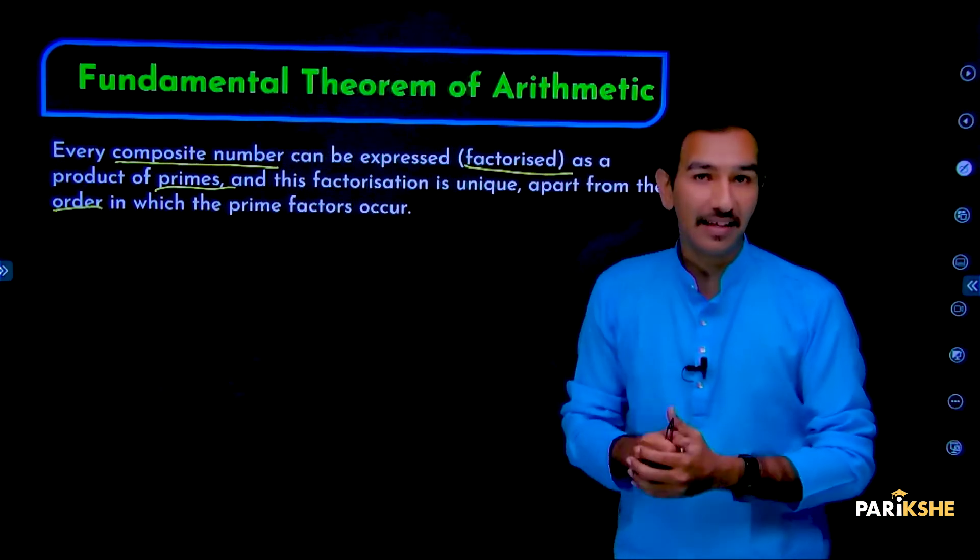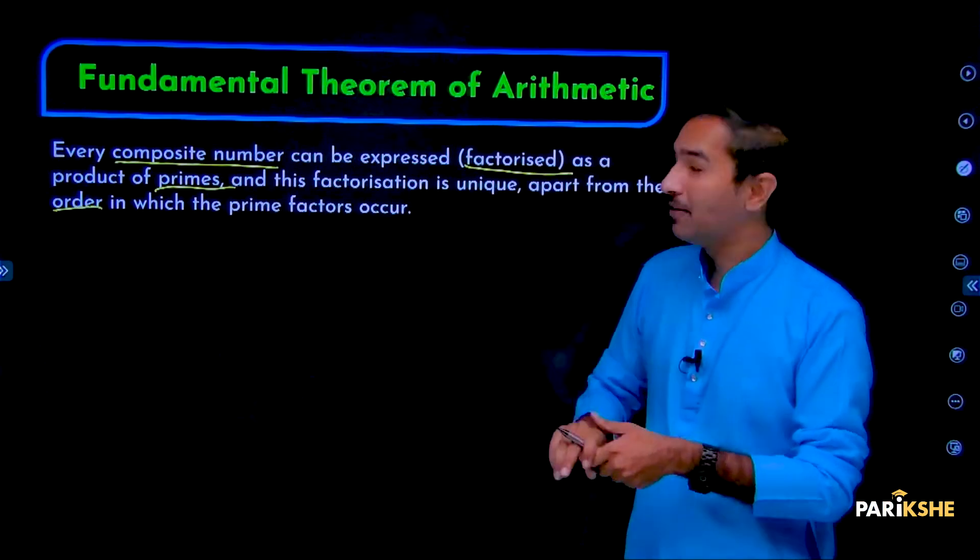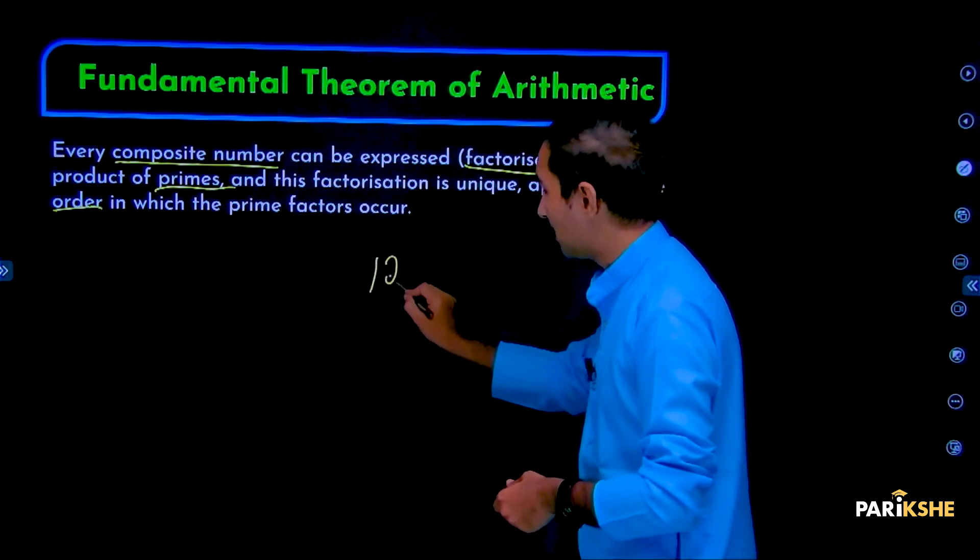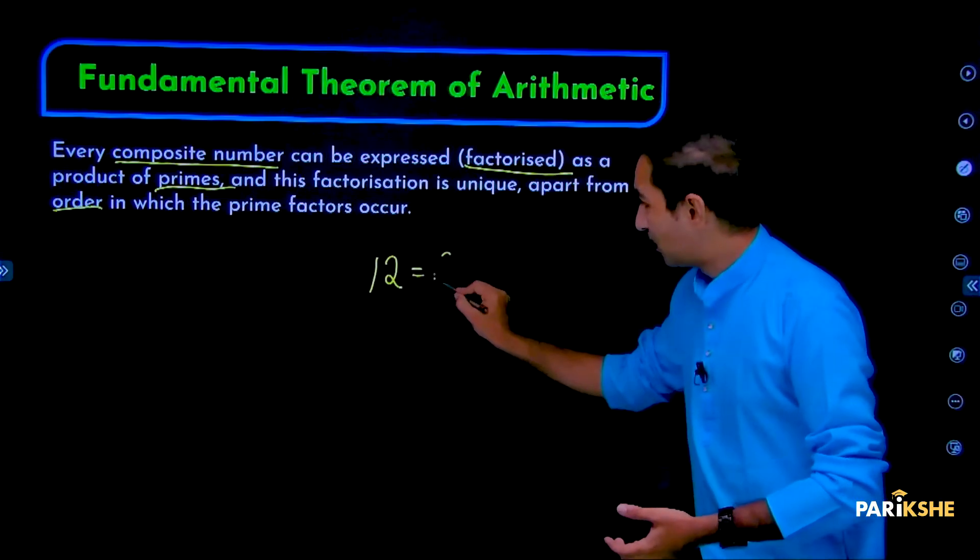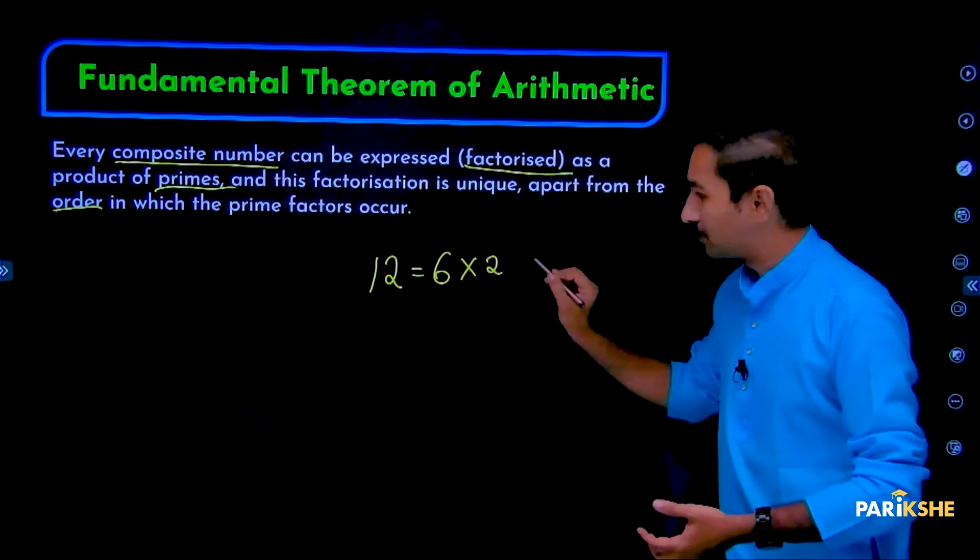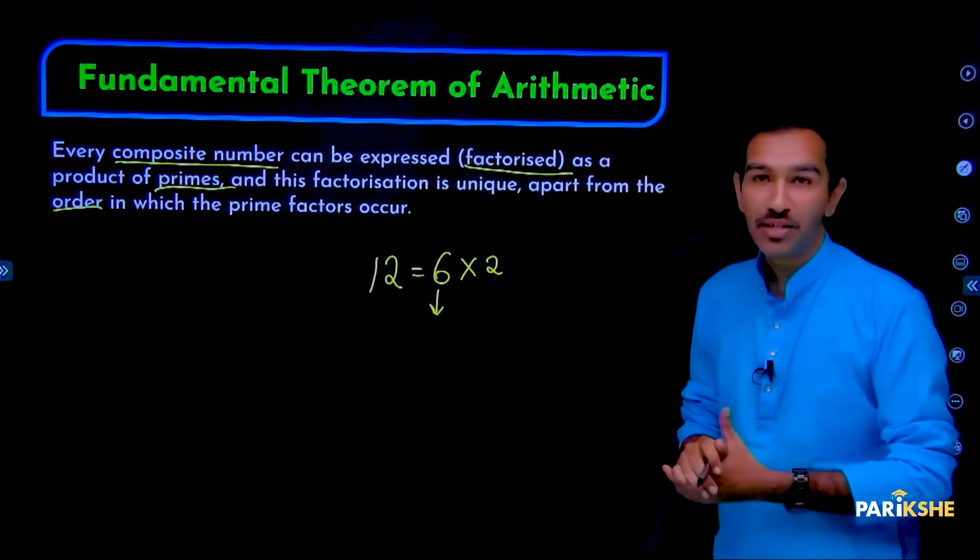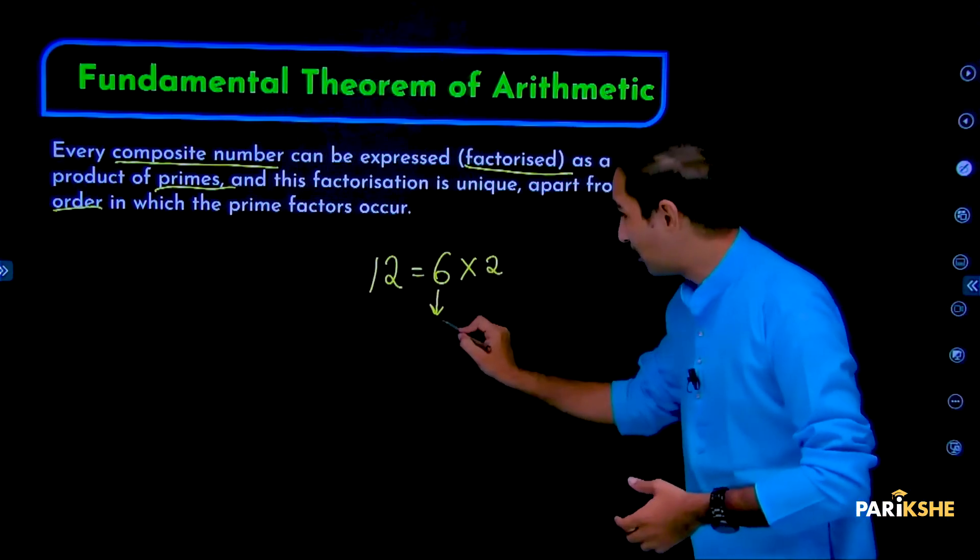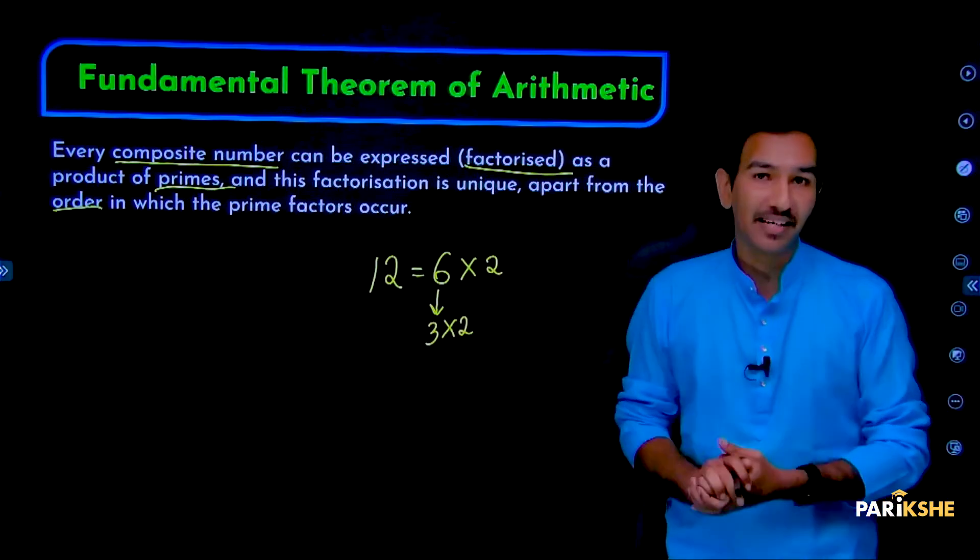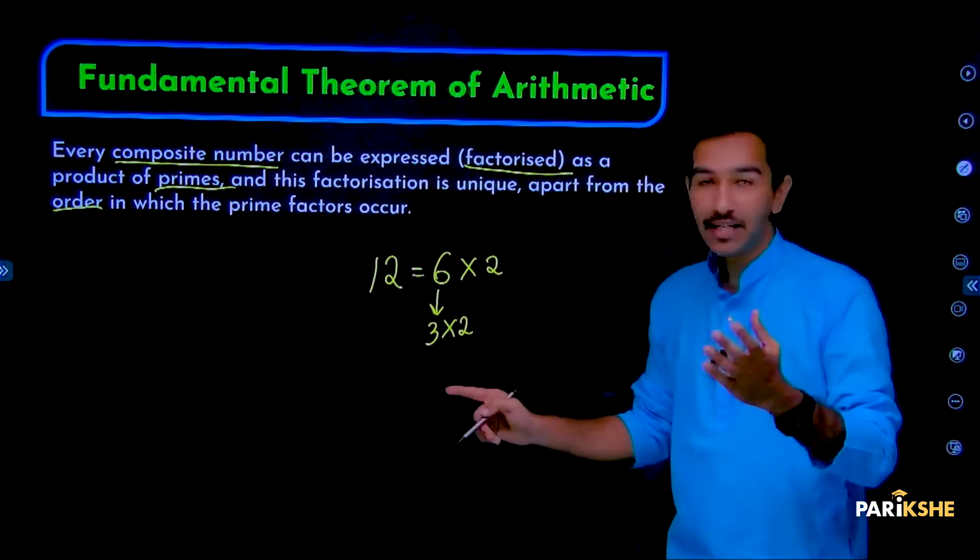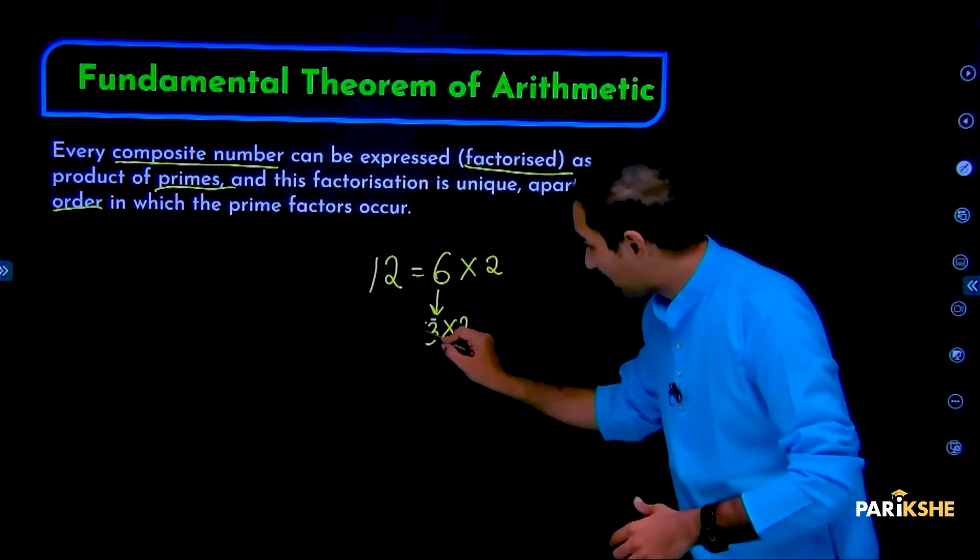This is composite. When we use many different materials to make something, we call it composite. Similarly, composite numbers - for example, 12 is a composite number. How? 12 is equal to 6 into 2. Is 6 composite? Yes, 6 is also composite because 6 is equal to 3 into 2.